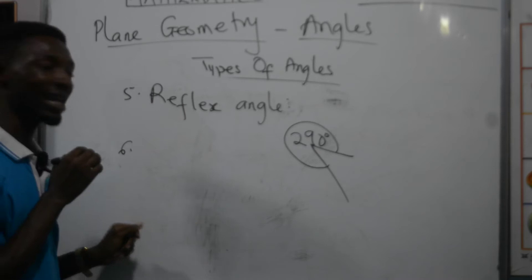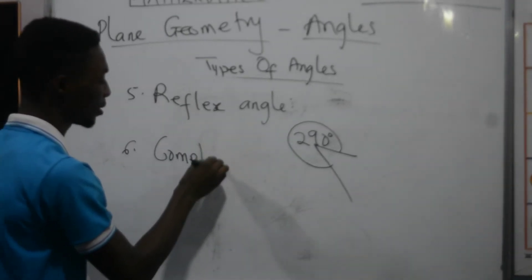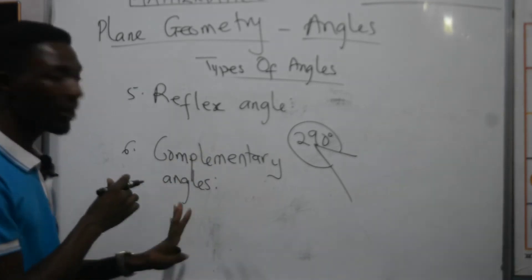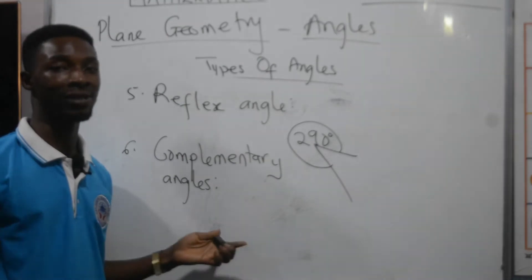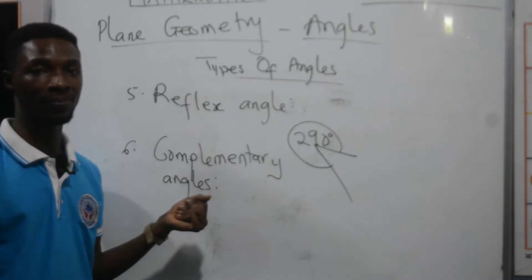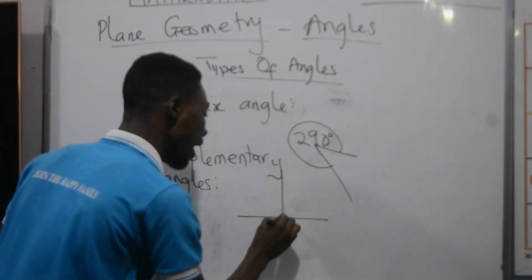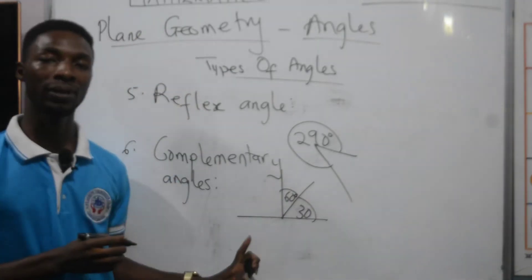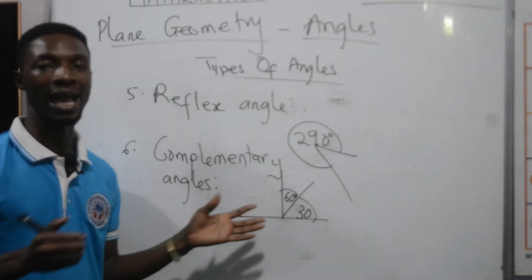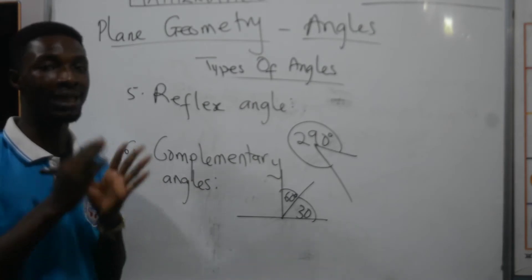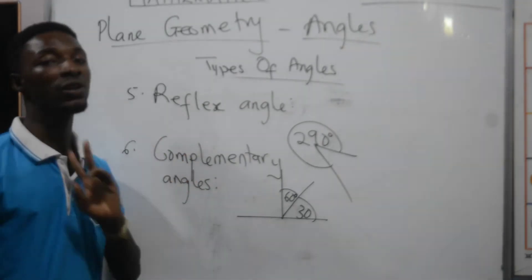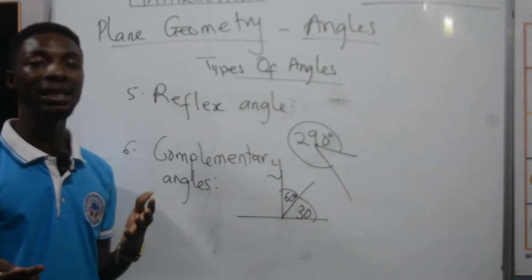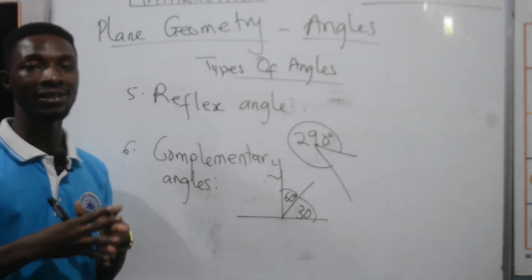The next type is complementary angles. Complementary angles represent two angles that share a relationship. Any two angles that sum up to 90 degrees are called complementary angles. Whenever you add two angles and the result is 90 degrees, those angles are complementary to each other. You can be given an angle and asked to find its complement — simply find the angle that, when added to the given angle, yields 90 degrees.